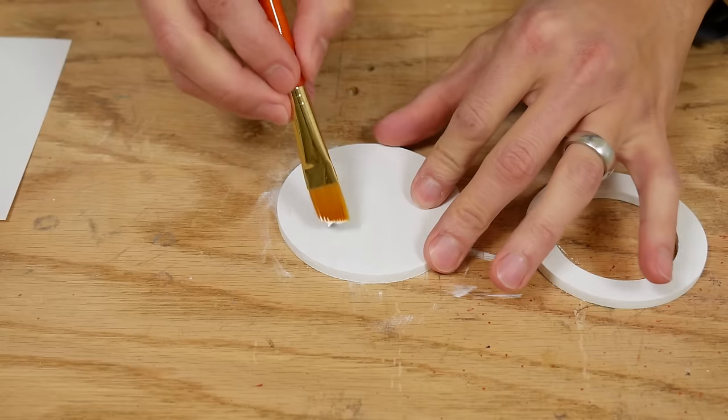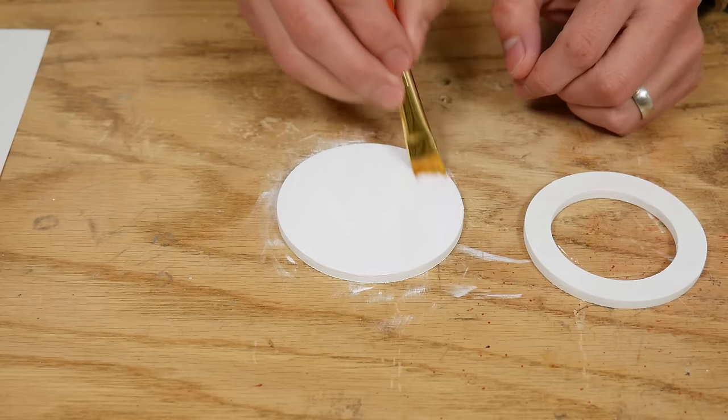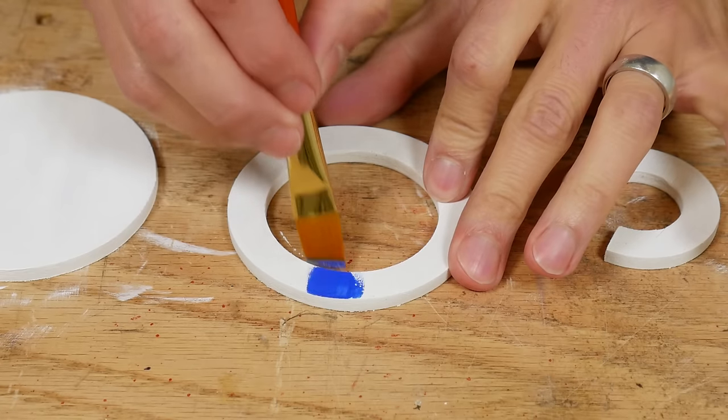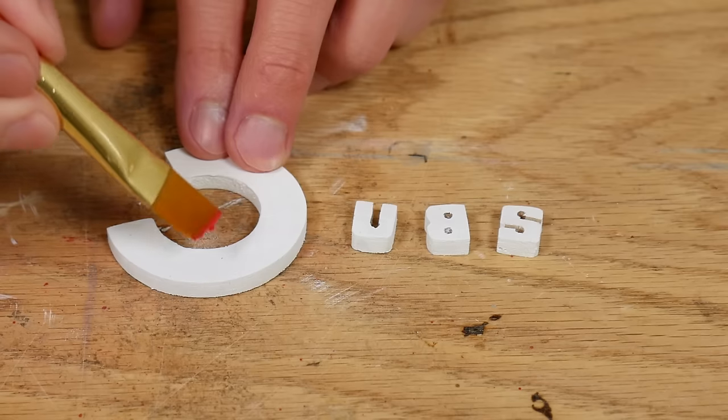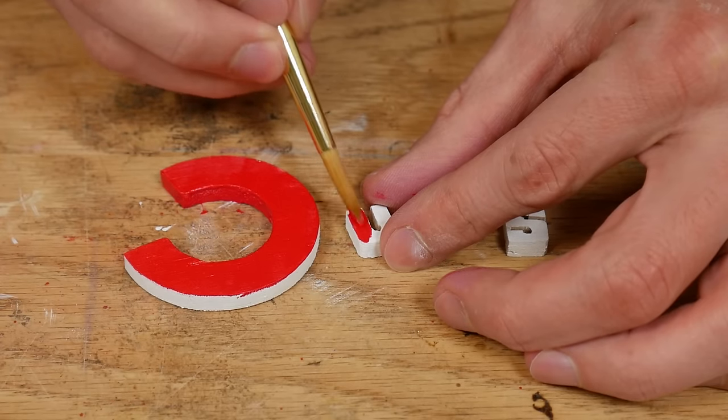I painted the largest circle white using acrylic paint. There are links below to the exact paints I used. Then I painted the ring blue and I painted all the letters red. I ended up applying three coats of paint.